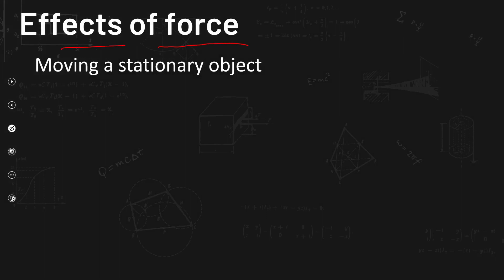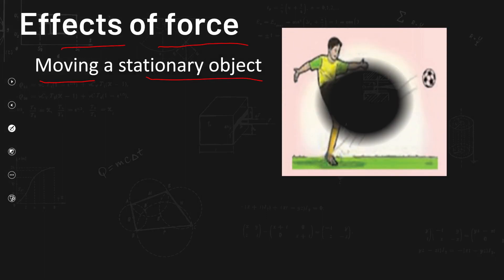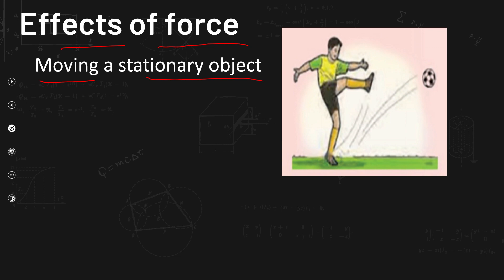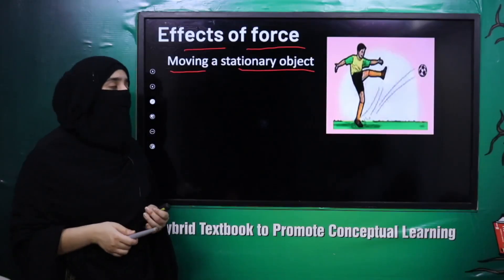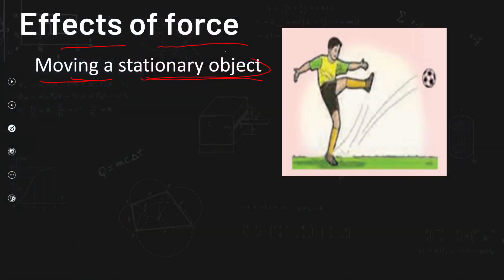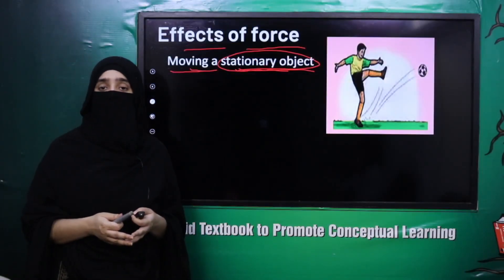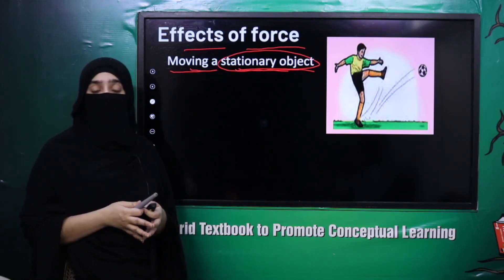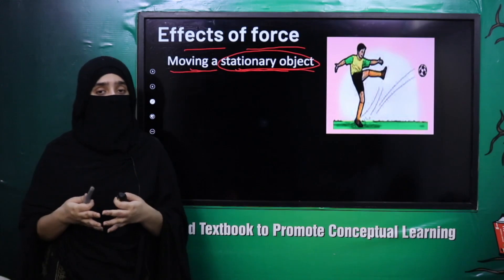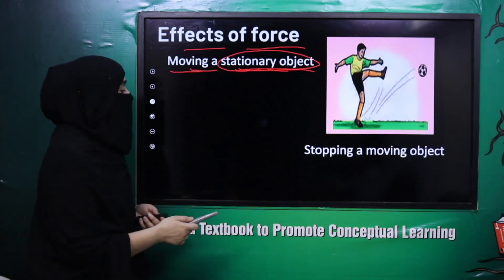Effects of force: first is moving a stationary object. Jaisa ke humne activity mein dekha ball ki — jab hum ball ko table pe put kiya aur usko push kiya, to wo stationary tha pehle. Jab humne usko push kiya to usme movement start ho gayi. So force jo hai wo stationary objects mein movement start karwati hai — jab hum kisi object pe force apply karte hain jo ruka hua hota hai, to usme motion start hoti hai.